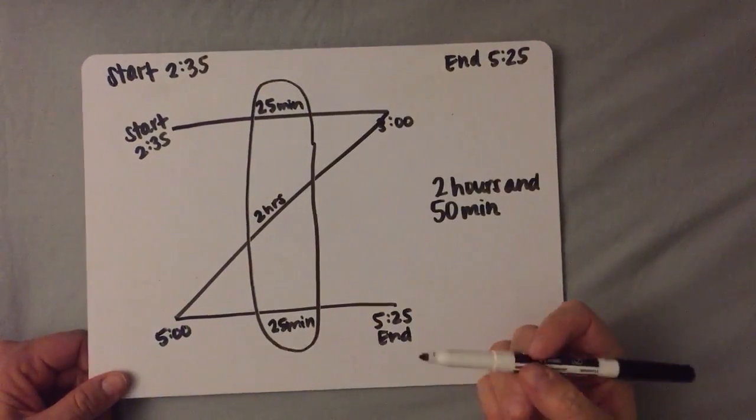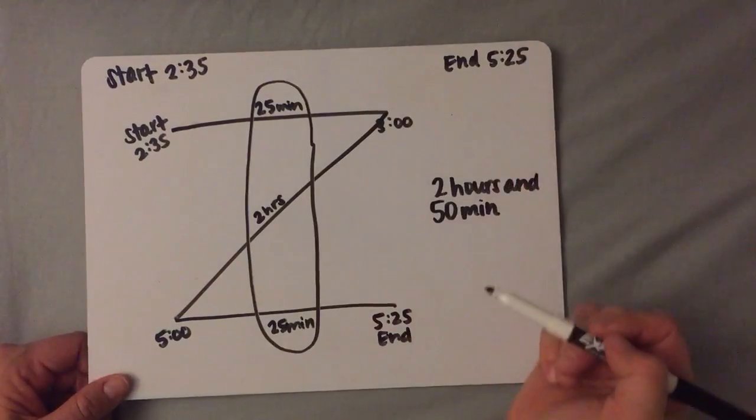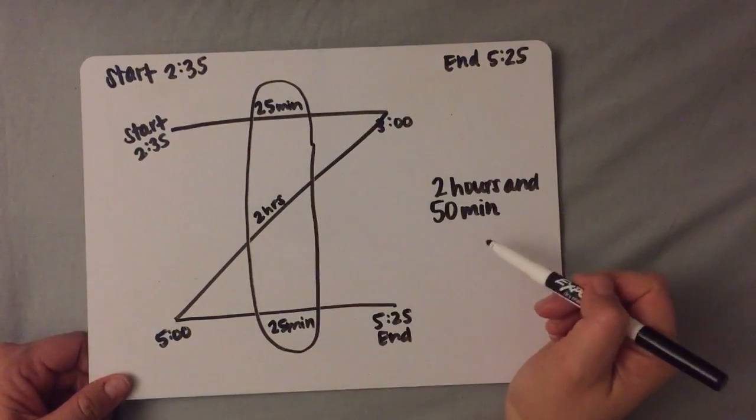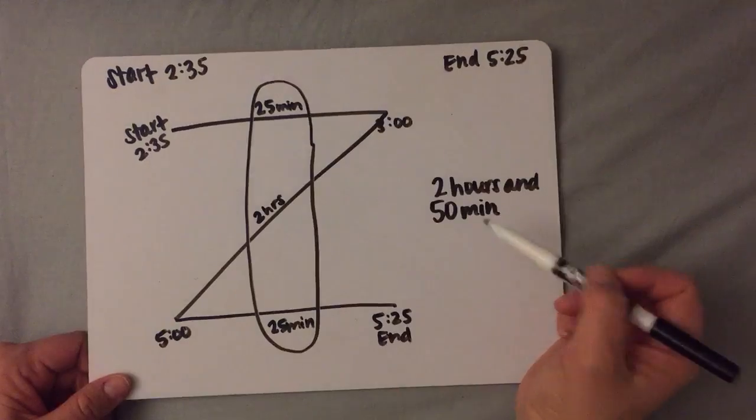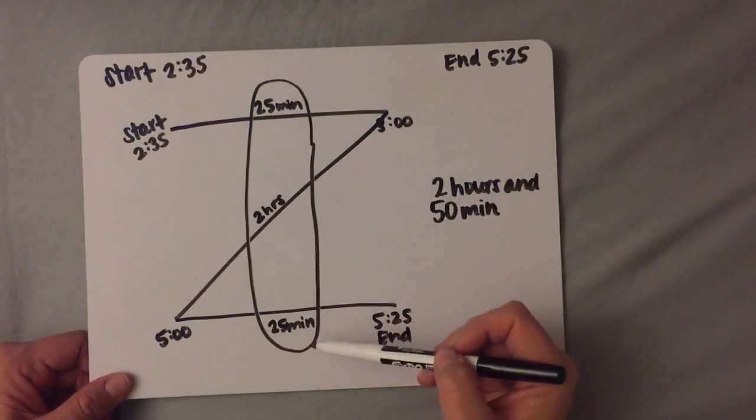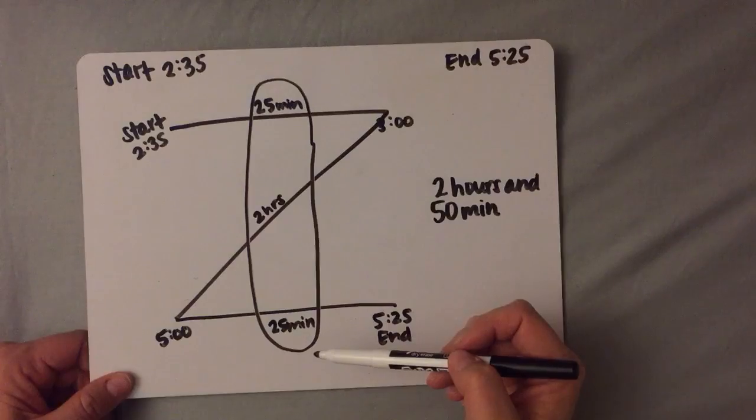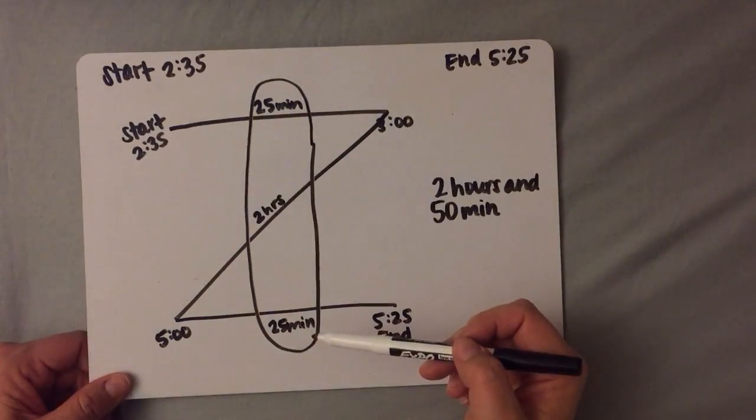So the elapsed time between 2:35 and 5:25 is 2 hours and 50 minutes. However, if you were to get minutes that exceeded one hour you would have to be able to convert that into hours and minutes on your own.